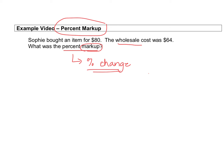Percent change is the difference between the two prices divided by the original cost. The wholesale cost is the original amount — the original cost.